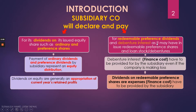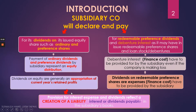Both redeemable preference shares and debentures are non-current liabilities. Therefore, provision for interest expense and dividends, if provided by the subsidiary company, reflects the creation of a liability — which will be the interest or dividend payable in the subsidiary's books. So in the separate books of the subsidiary, this will be disclosed in the current liability section of the statement of financial position.